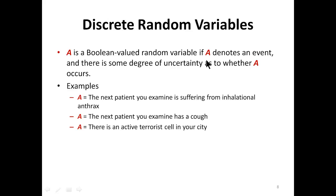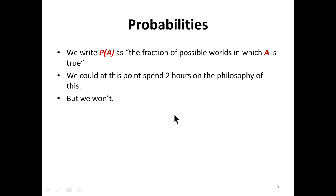A is a Boolean-valued random variable if A denotes an event and there is some degree of uncertainty as to whether A occurs. Examples of a discrete random variable A: the next patient you examine is suffering from inhalational anthrax; the next patient has a cough; there is an active terrorist cell in your city. So we write P of A — the probability of A — as the fraction of possible worlds in which A is true, meaning we are calculating the possibility that A is true.